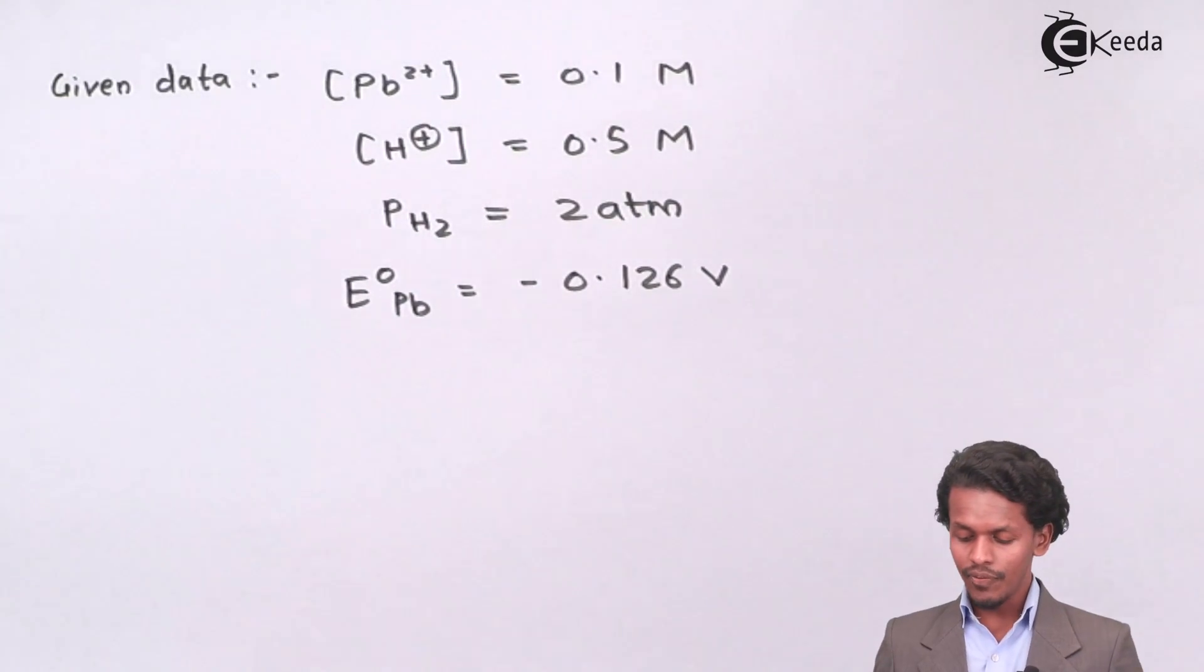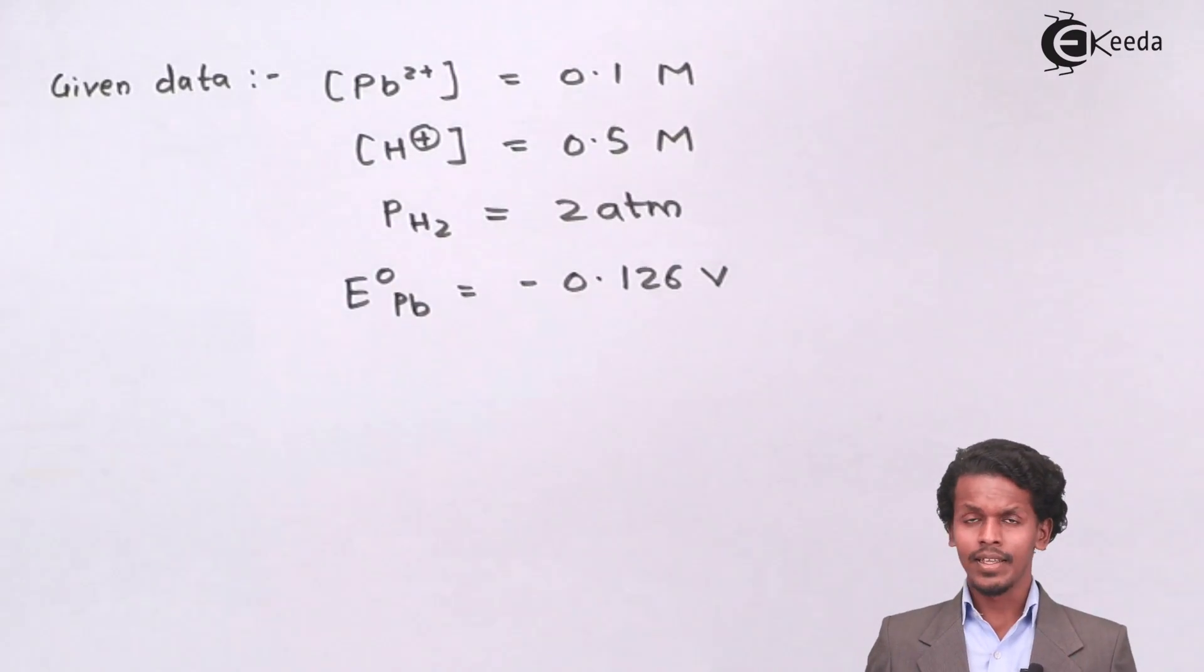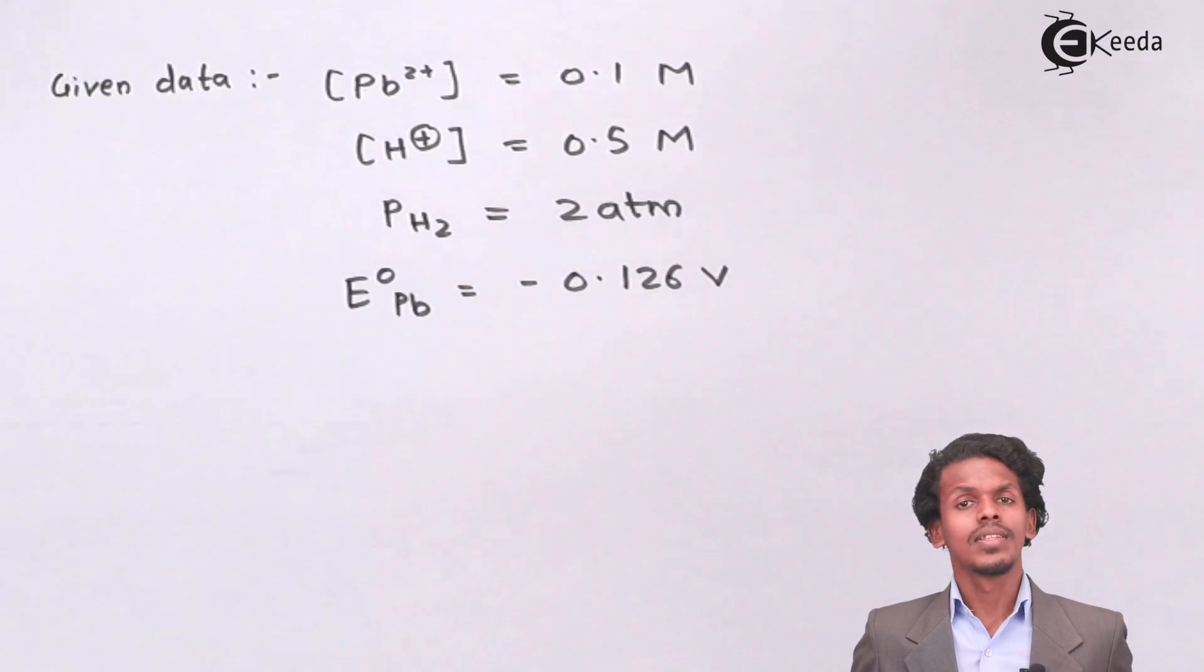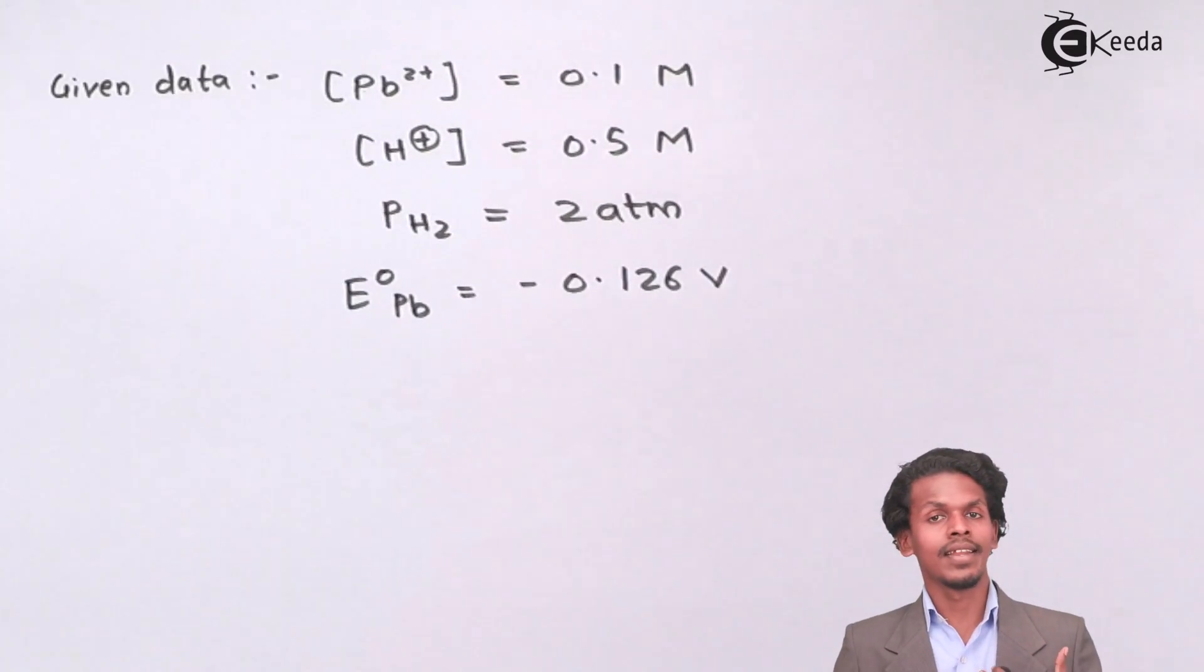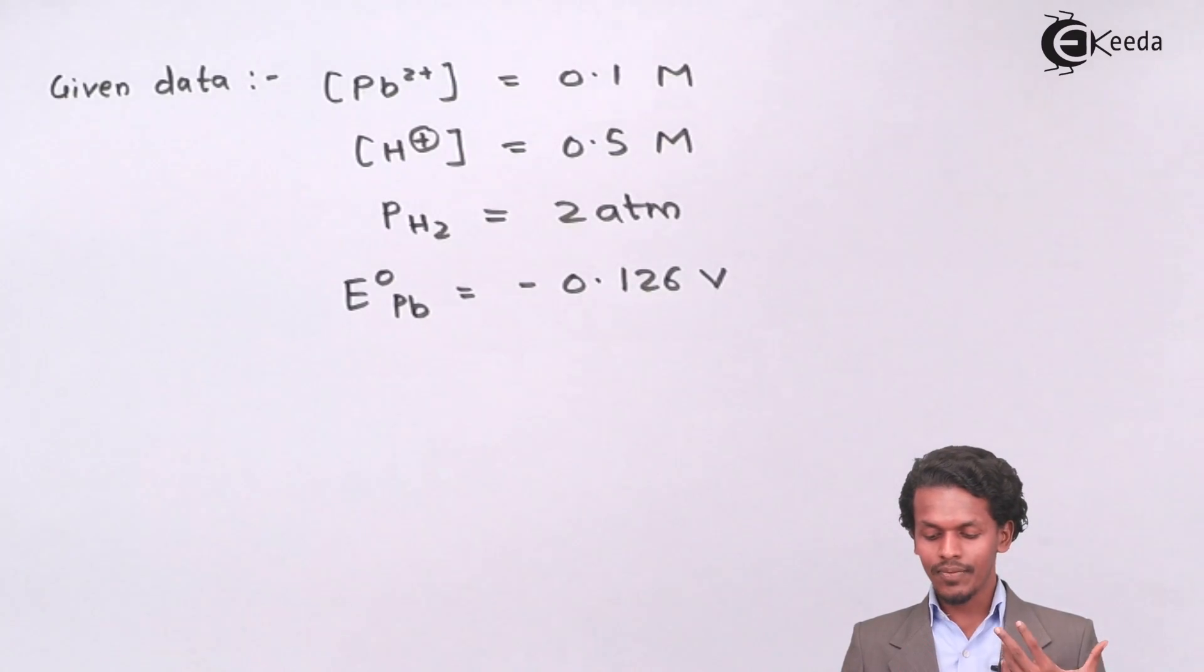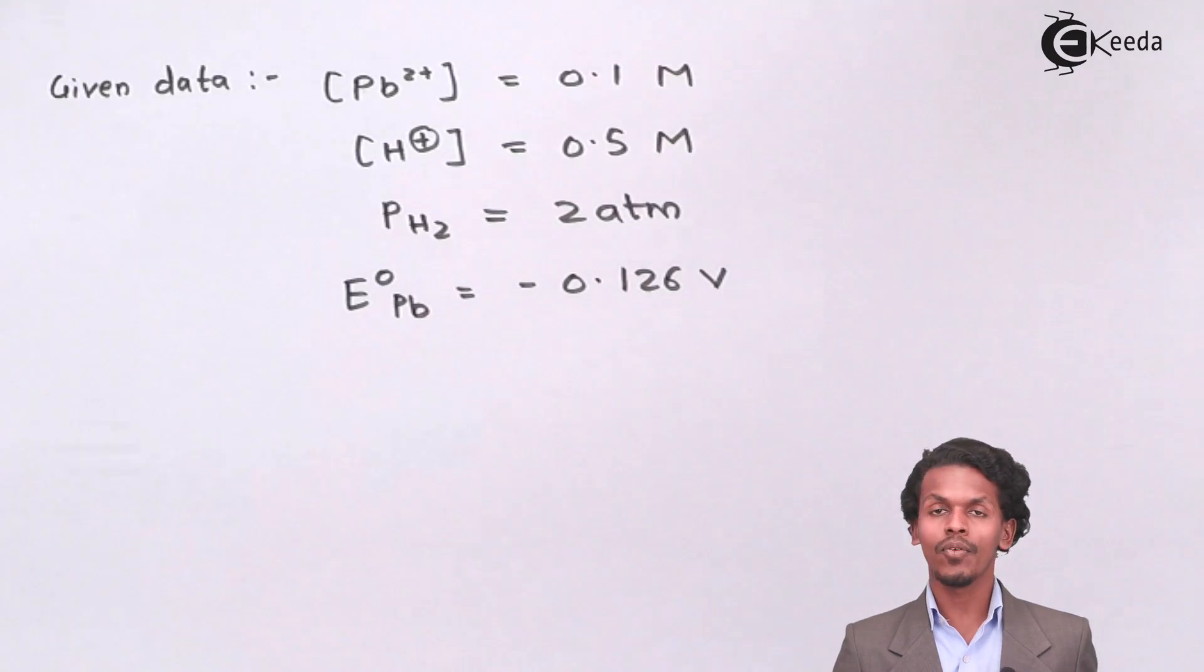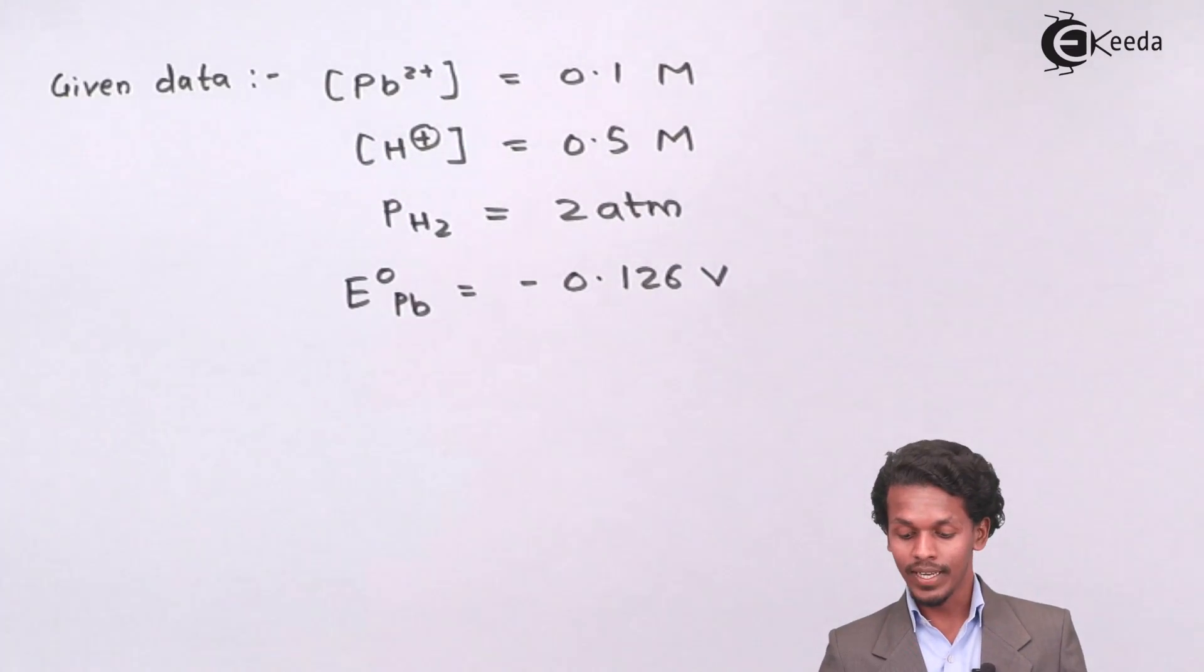That should be a consideration that if the overall cell reaction has an EMF of a value which is negative, the cell reaction won't take place or the EMF won't take place and there will be no flow of electrons. Because the E° of Pb, that is standard EMF of Pb, is less than 0, that means it is acting like an anode.